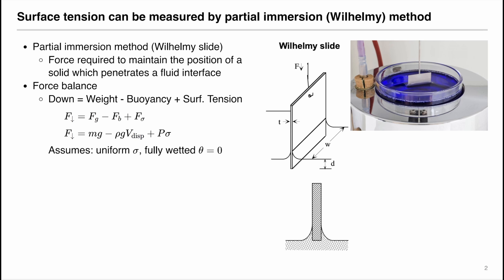This force balance assumes that the surface tension is uniform across the interface and the fluid fully wets out the solid, meaning that the contact angle is equal to zero. This force balance is general and can be applied to various geometries, not limited to the Wilhelmy slide. It can also be applied to rods, as long as we know the wetted perimeter as well as the displaced volume.